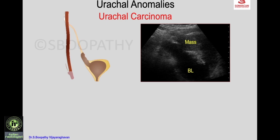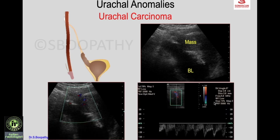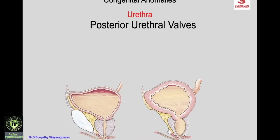Urachal carcinoma can bulge into the bladder: an irregular pyramidal mass protrudes into the bladder from the dome with an irregular mass in the wall. Color Doppler shows flow within it with a low-resistance flow pattern, confirming urachal carcinoma with extension into the lumen of the bladder.